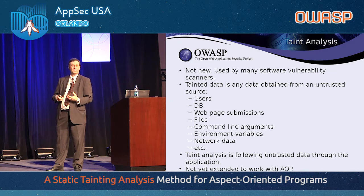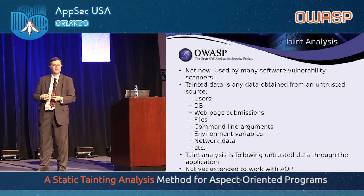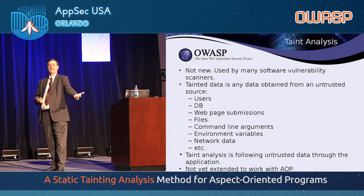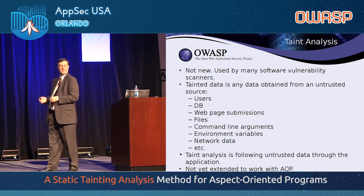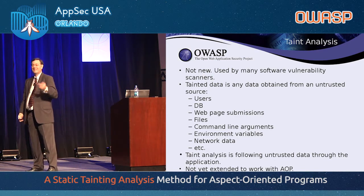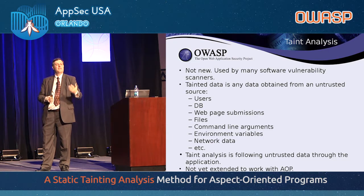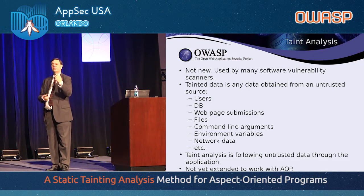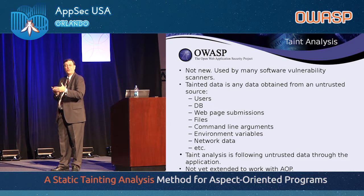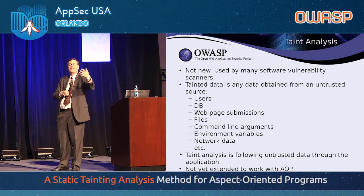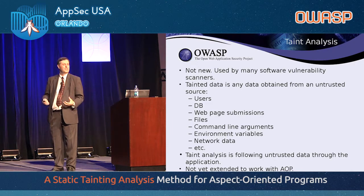Tainted data is any data that comes from any untrusted source — users, databases, files. Do you really trust all the data in files input to your application? Think of Microsoft Word — it certainly can't trust files that are coming in. Nobody's seen malware in a Word document, right? Basically, taint analysis follows untrusted data through the application to see how it gets used, and reports on places where it gets used unsafely. The problem is that because aspect-oriented programming changes the control flow — injecting code into the original objects — it blows the taint analysis model out of the water.